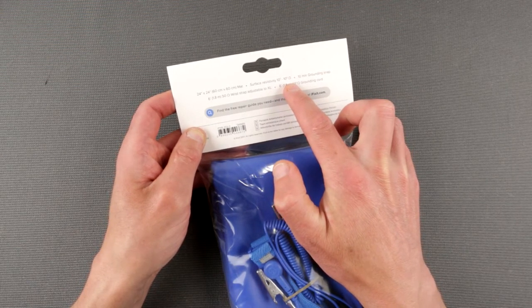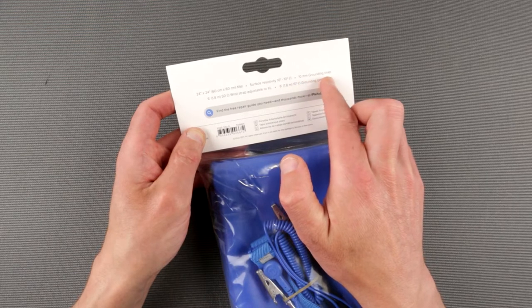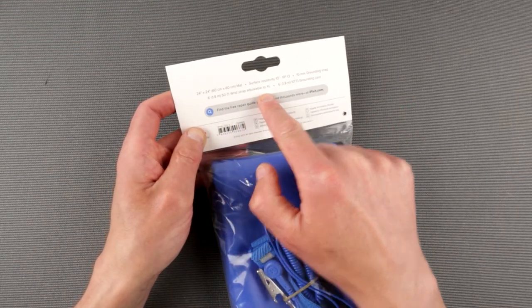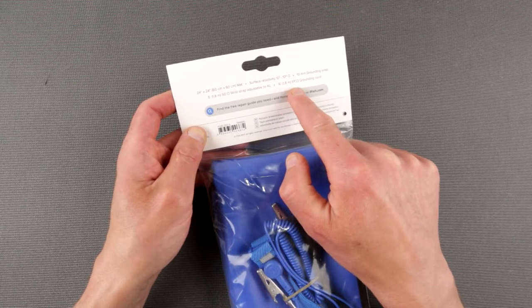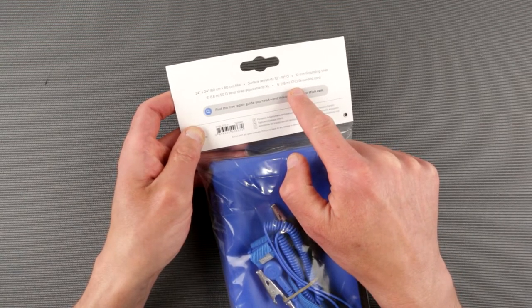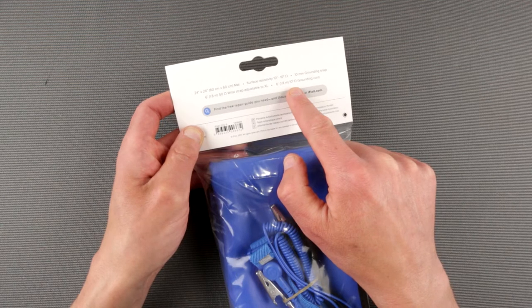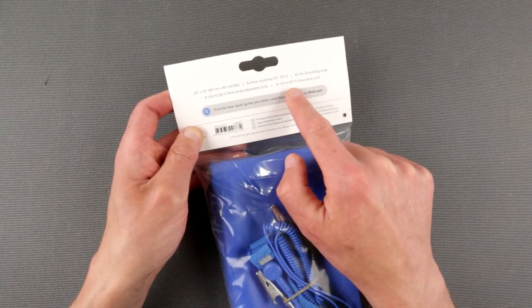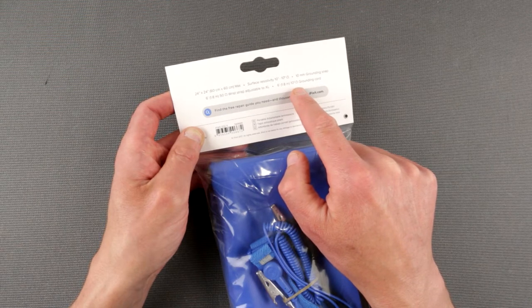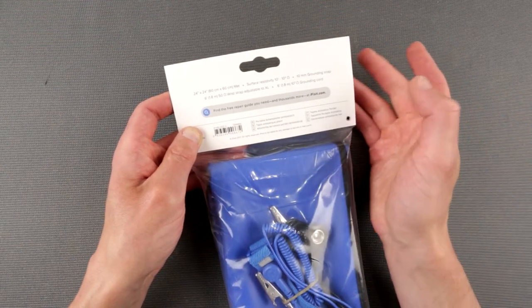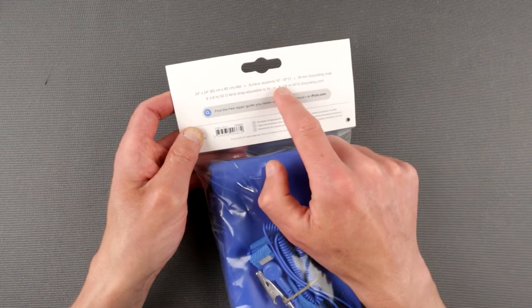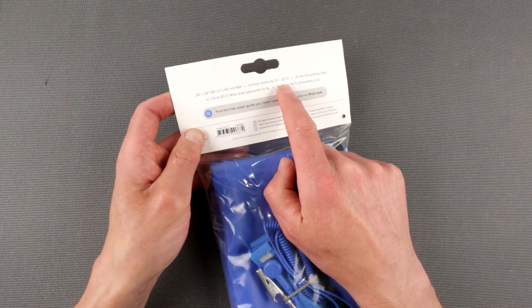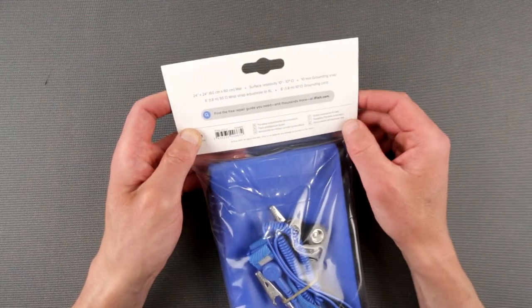Surface resistivity is in the range of 10 to the power of 7 to 10 to the power of 9 ohms. It has a 10 millimeter grounding snap, 50 ohm wrist strap adjustable to a specific size, and one megaohm grounding cord. I'm just wondering why they put this as 10 to the power of 5 - it's like just put one megaohm.